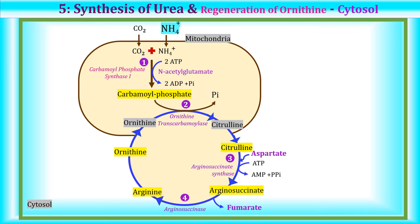The fifth reaction is synthesis of urea from arginine, with regeneration of ornithine, occurring in the cytosol. Arginine formed in the fourth step is acted upon by arginase to form urea, and ornithine is regenerated, which is transported back into the mitochondria for the second reaction — and the cycle continues. Urea formation occurs only in the liver because arginase is exclusively present in the liver; it is not present in the kidney or intestine. In all other cells, arginine synthesis can occur, but urea synthesis requires arginase, which is liver-specific.